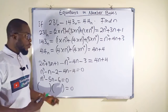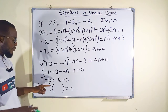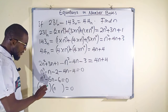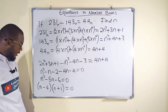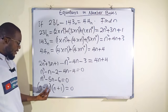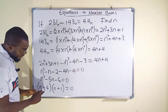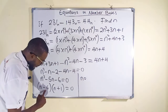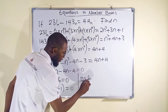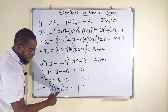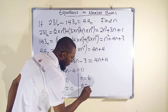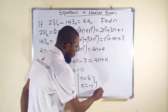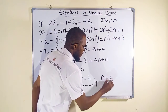We solve this quadratic by factorization. We need two numbers that multiply to negative 6 and add to negative 5. Those numbers are negative 6 and positive 1. Setting each factor to zero: n minus 6 = 0 gives n = 6, and n plus 1 = 0 gives n = negative 1. Since n is a base and we cannot have a negative base, n equals 6 is our answer.